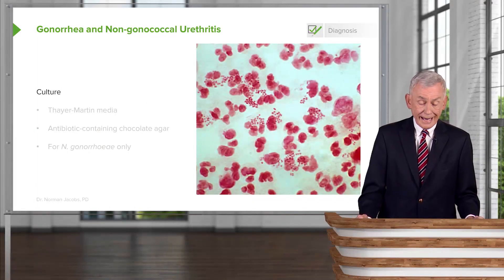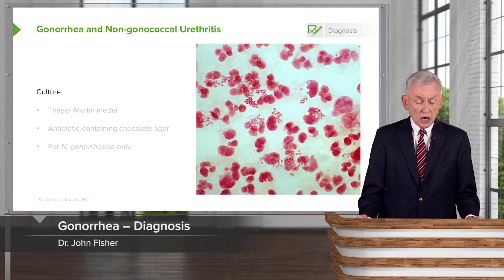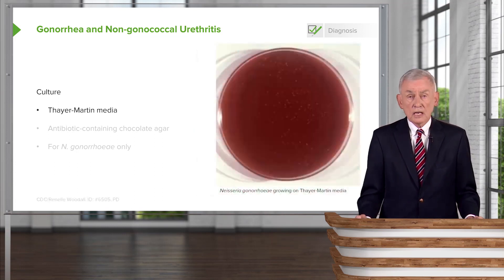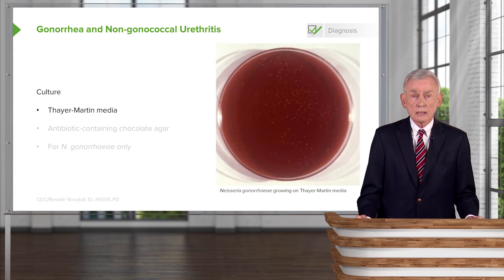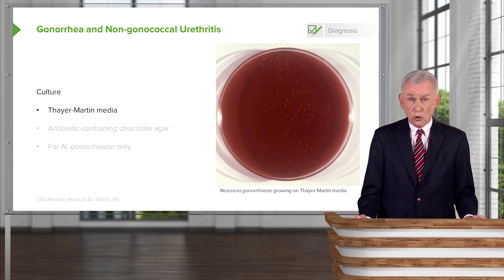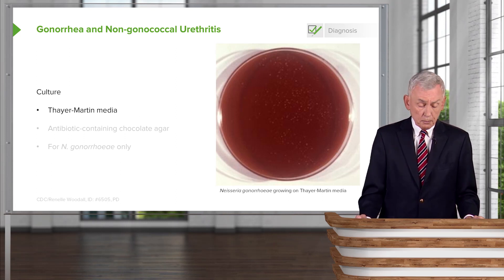To prove that a patient has gonorrhea versus non-gonococcal urethritis, you would want to culture the discharge and gram stain the discharge. The typical culture media is Thayer-Martin medium. Thayer-Martin is nothing more than chocolate agar, which will grow many organisms and supplies hemin and nicotinamide adenine dinucleotide to fastidious organisms. So many things will grow on Thayer-Martin medium.